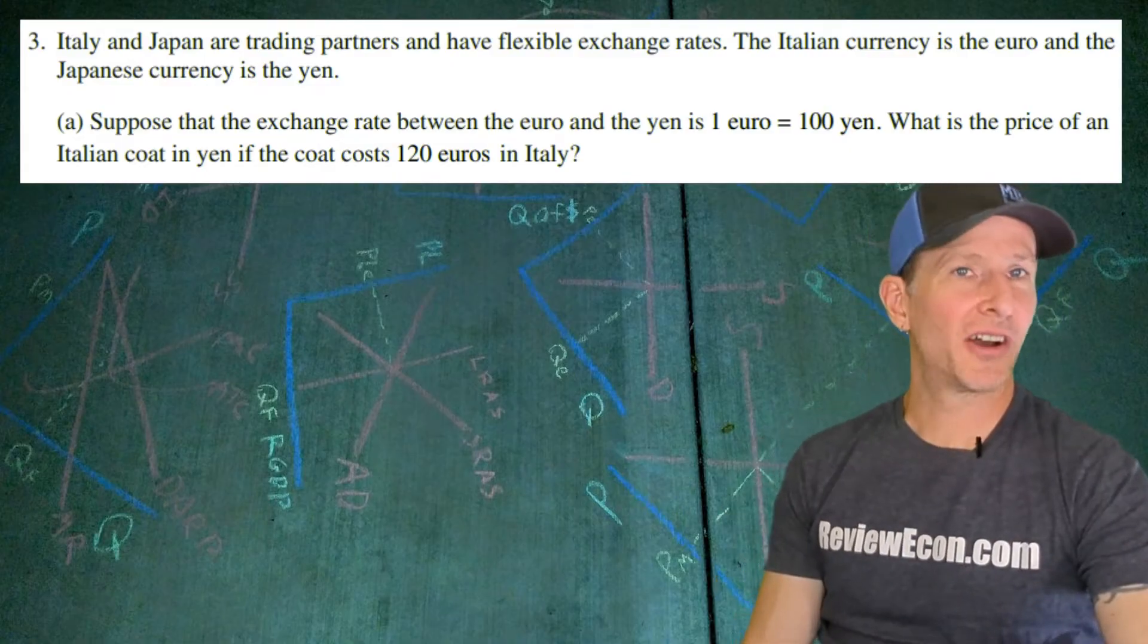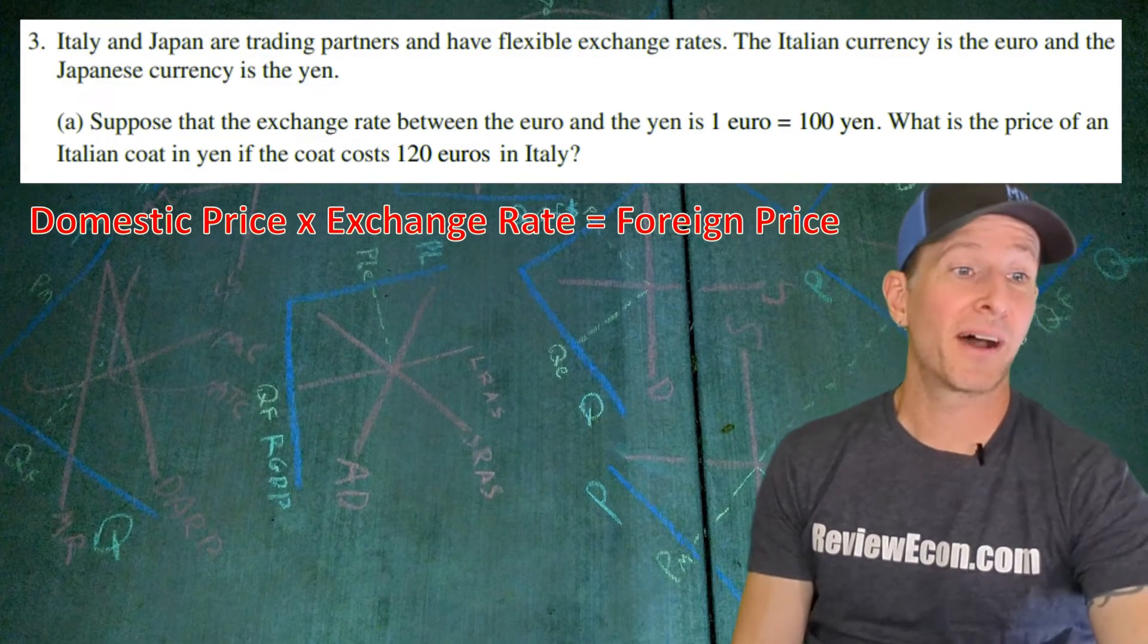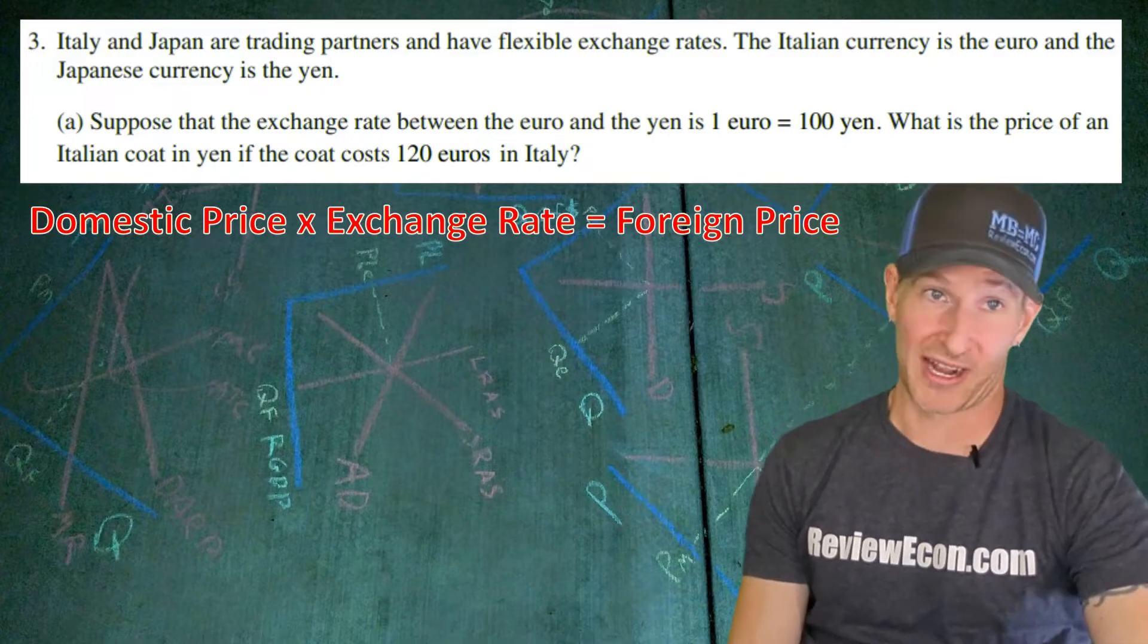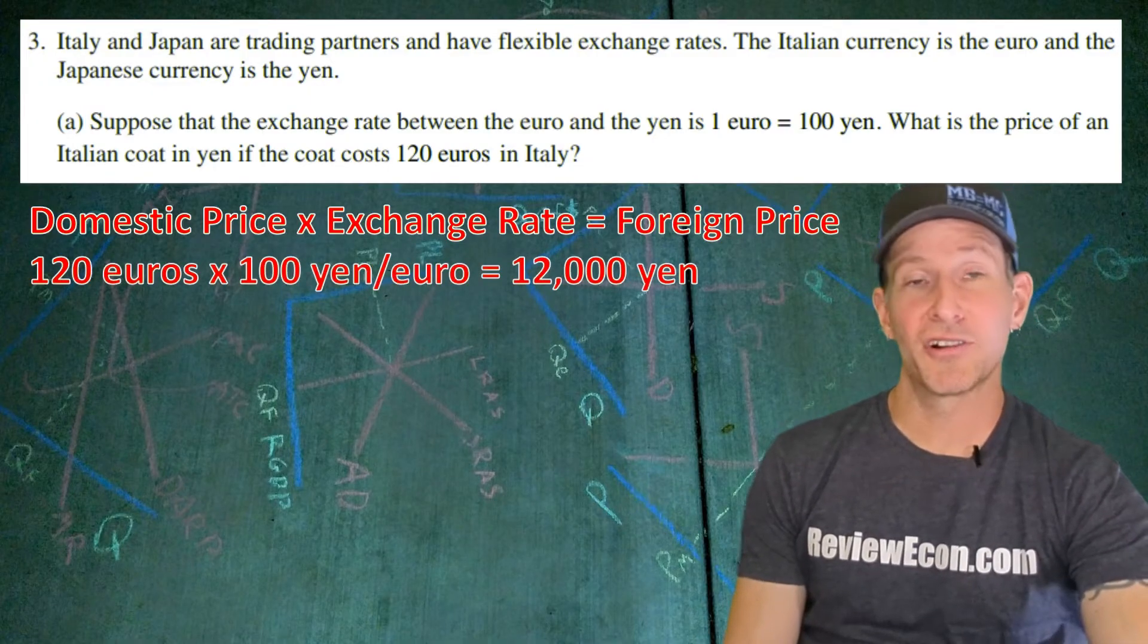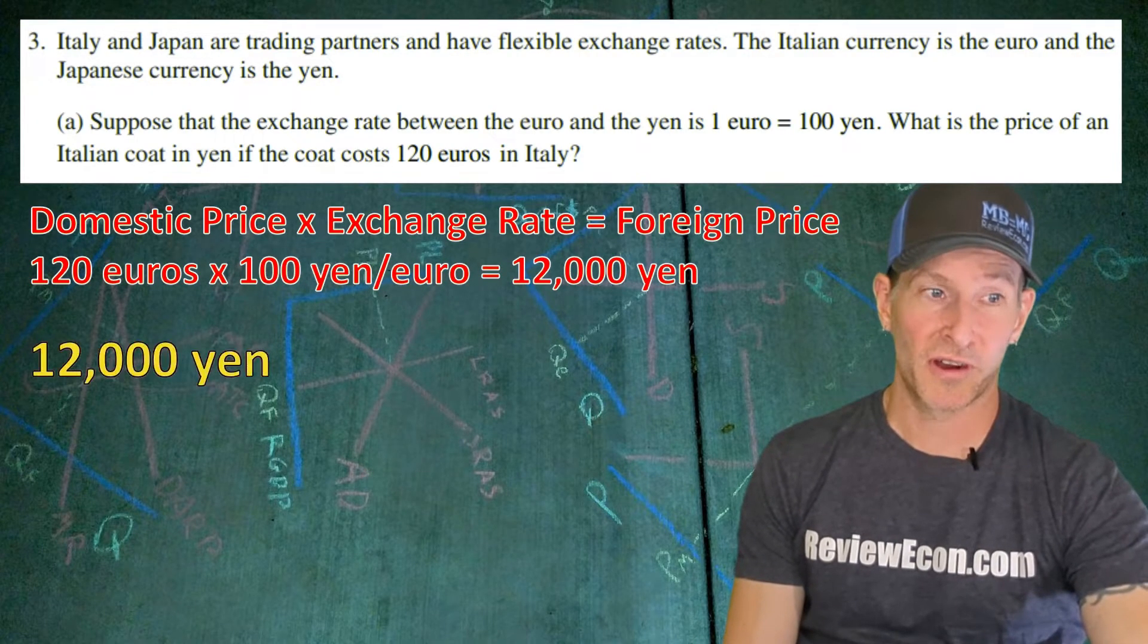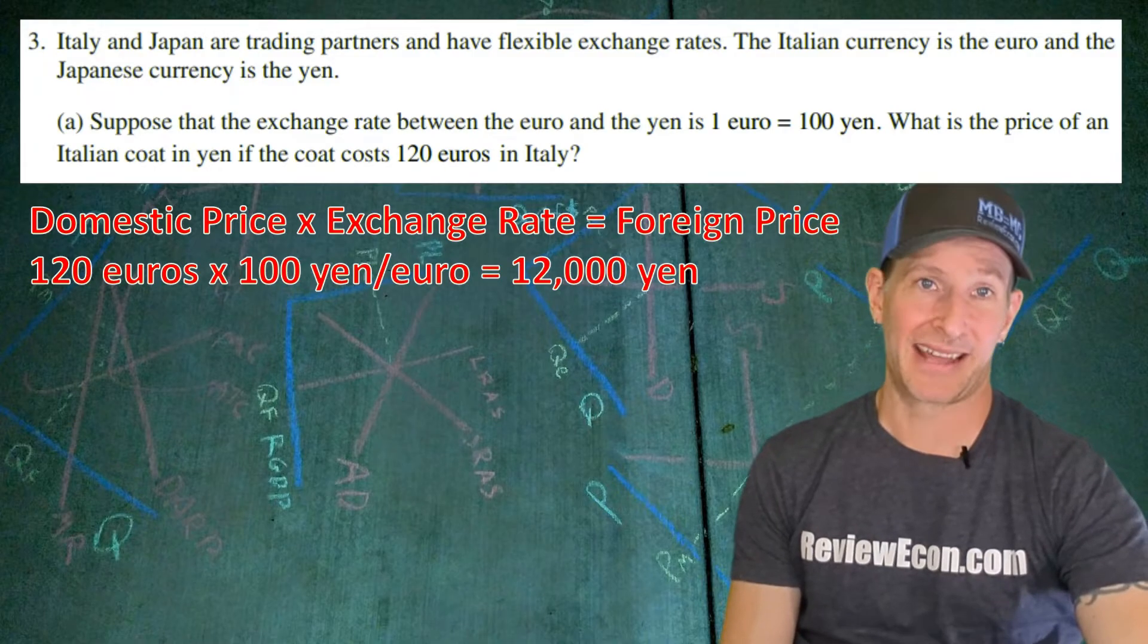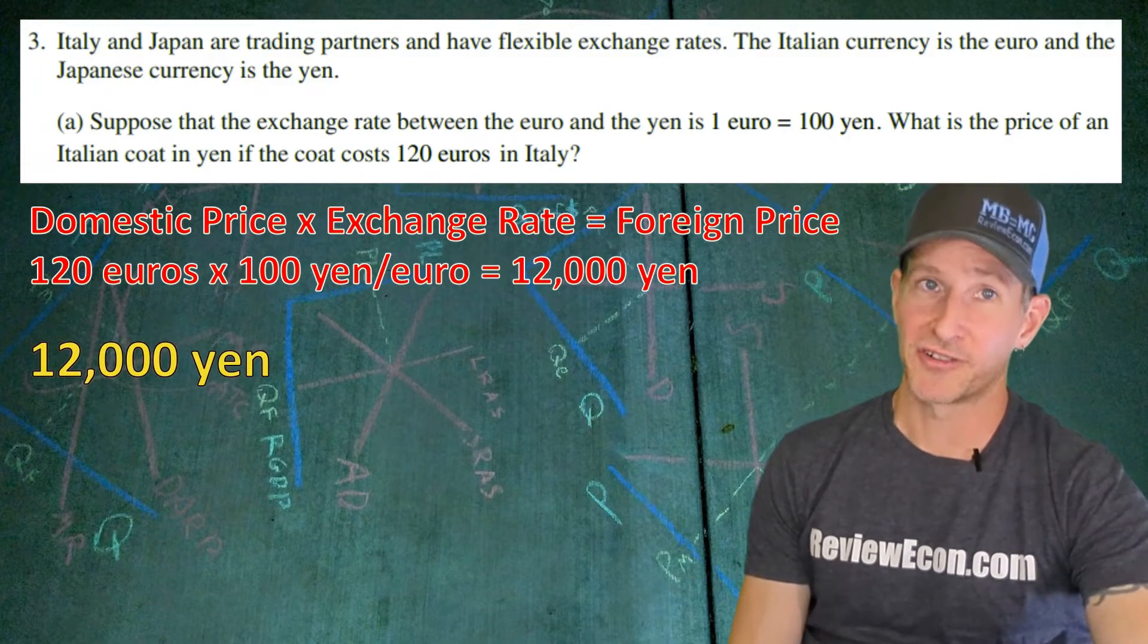To answer this question, we need to know that we will take the domestic price and multiply it by the exchange rate to get the foreign price. So 120 euros times the 100 yen per euro equals 12,000 yen. In order to get this point, you simply have to identify 12,000 yen.